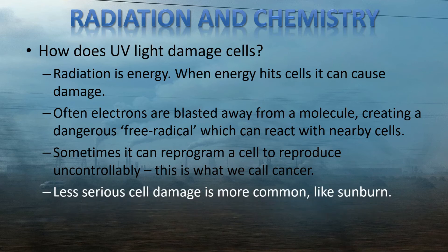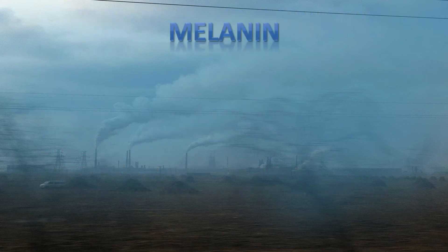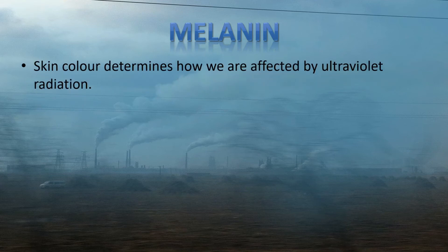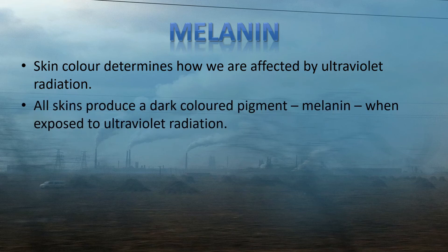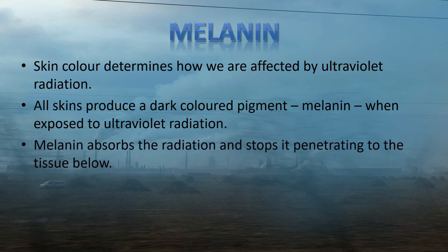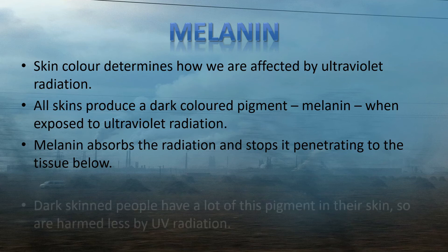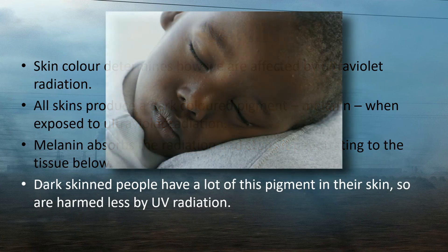Obviously, less serious cell damage is much more common, like sunburn, but sunburn still is not much fun. To help us combat the effects of radiation is the chemical melanin. Skin colour determines how we are affected by UV light. All skins produce a dark coloured pigment called melanin when exposed to ultraviolet radiation — this is the reason you might get a suntan when you go outside. Melanin absorbs the radiation and stops it from penetrating the skin to the tissue below, reducing the chance of cell damage. Darker skinned people have a lot of this pigment in their skin, so they are harmed much less by UV radiation.